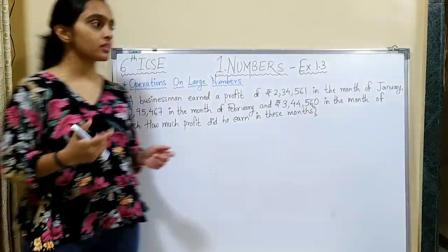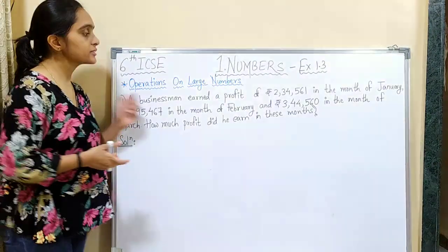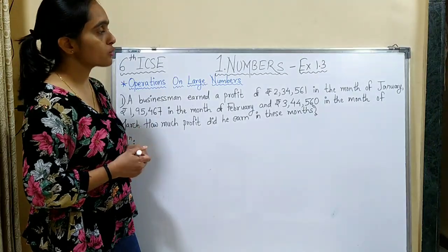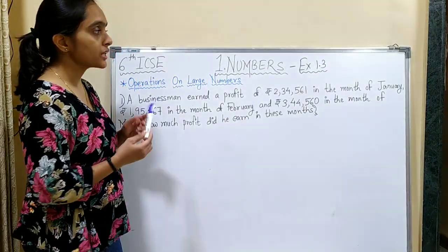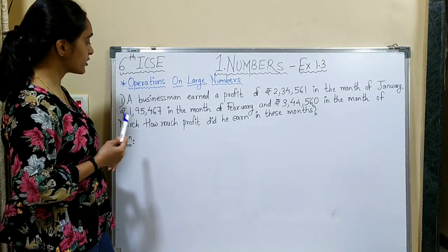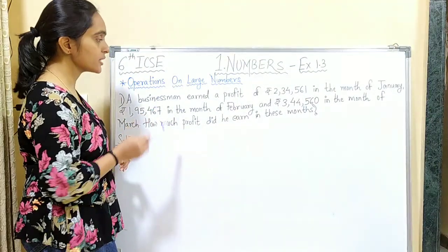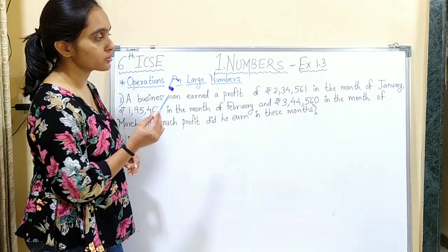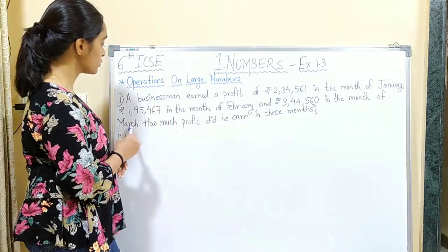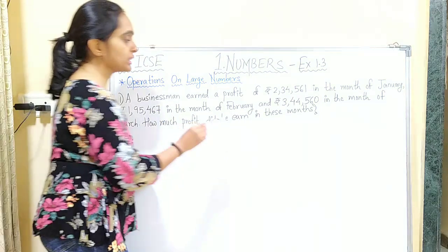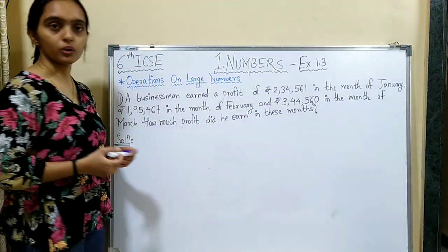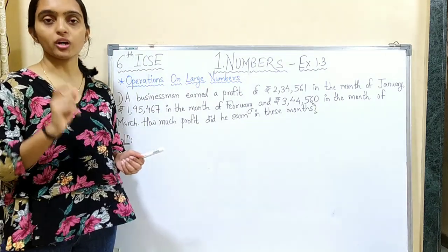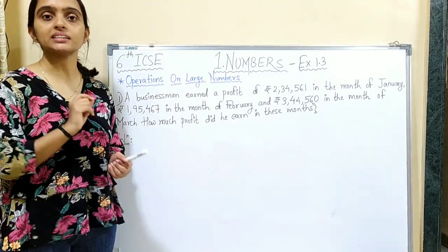The first question says: a businessman earned a profit of Rs. 2,34,561 in the month of January, Rs. 1,95,467 in the month of February, and Rs. 3,44,561 in the month of March. How much total profit did he earn in these months?